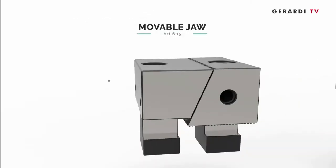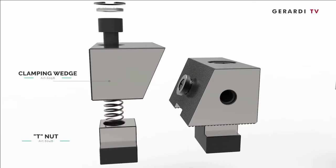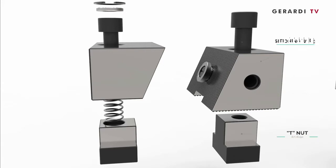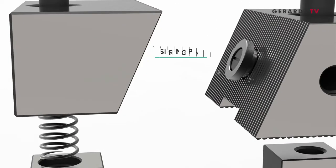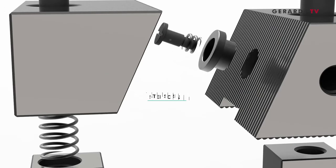With this system, it is possible to vary work-holding features, keeping the standard base clamped to the machine table and changing only the position, the number, and the types of the movable jaws needed to change from one job-work cycle to a different one.